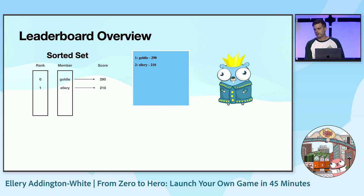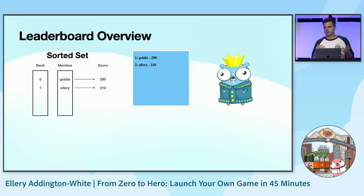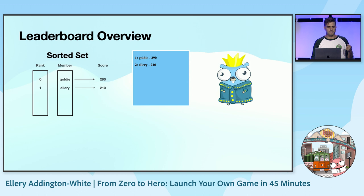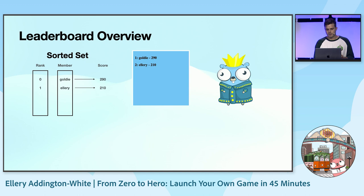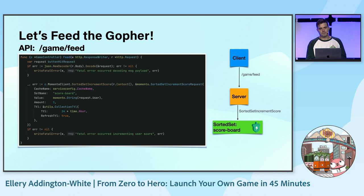The first thing we're going to focus on is a leaderboard, powered by a sorted set — a common data structure used for these types of leaderboard experiences. A sorted set has a set of unique members, and each member has a score and a rank based on that score, so it stays in sorted order. For example, Goldie has 290 points and is first, and Ellery has 210 points and is second.